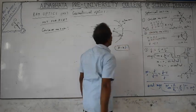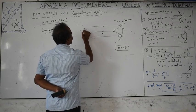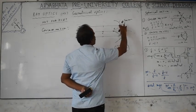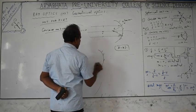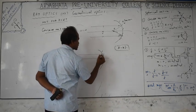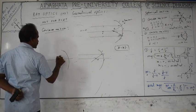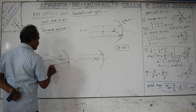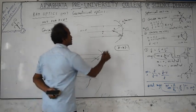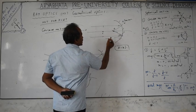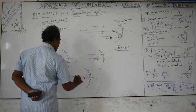For a concave mirror with object at infinity, parallel rays after reflection from the mirror pass through the focus. Three important ray diagram principles: (1) Light rays parallel to the principal axis pass through the focus after reflection. (2) Light rays already passing through the focus become parallel after reflection. (3) Light rays passing through the center of curvature C retrace their path. Center of curvature C is at distance R from the pole, and R equals 2f.